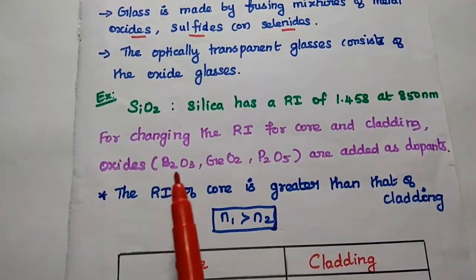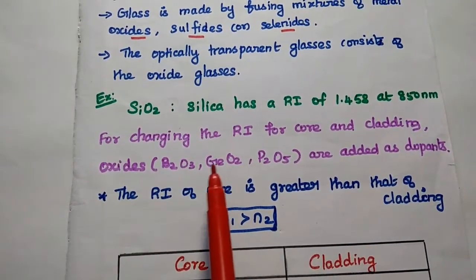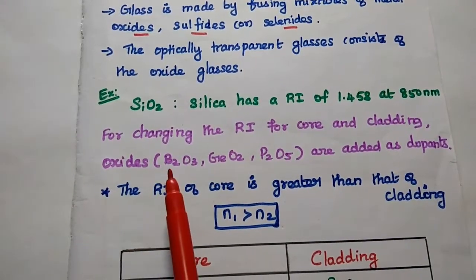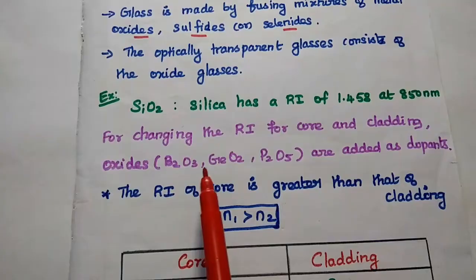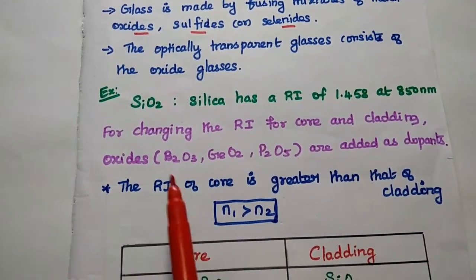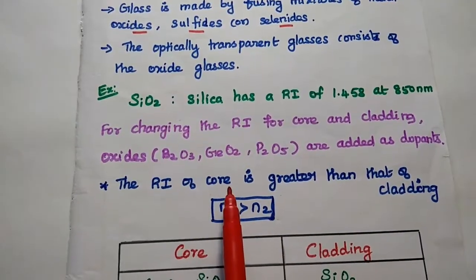So if you are going to change the refractive index, we have to add these oxides. Here, boron trioxide, germanium dioxide, phosphorus pentoxide. So these all are the oxide dopants.